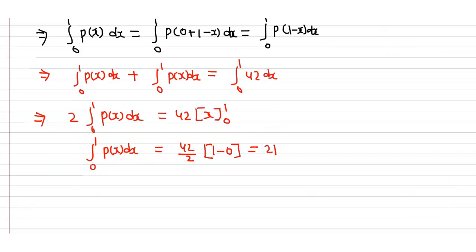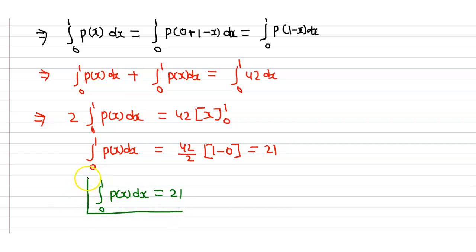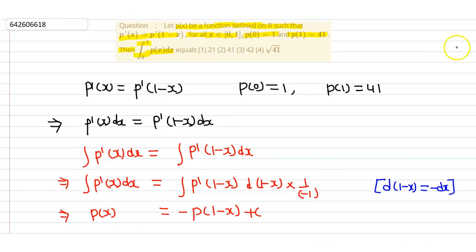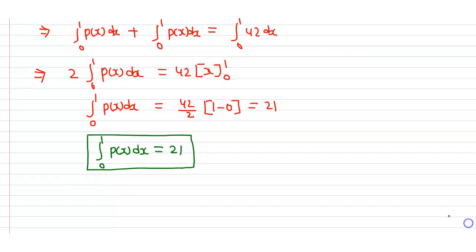Hence the required answer: the integral from 0 to 1 of p(x) dx is equal to 21. So option 1, that is 21, is the correct option. Therefore option 1 is the correct option.